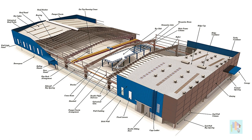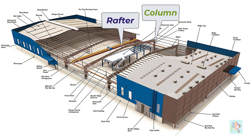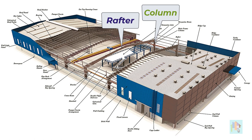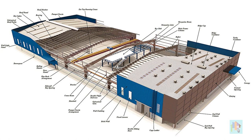Let's start with the main supporting members which we need to model. The main frame consists of column and rafter. Typically a tapered section with different start and end depth is used. These members create the main structural cage and carry and finally transfer all the loads to the foundation. We also need to model any load-carrying column and beam, like the structural members at the end panels or any intermediate column which supports a platform or load-bearing element.